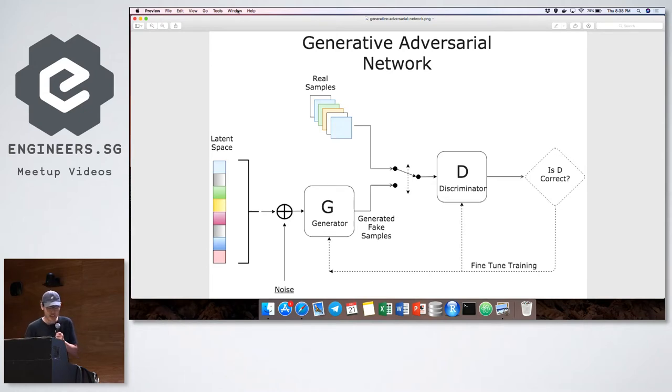So GANs are actually a system of two neural networks, one called the discriminator and one called the generator. I took this off some image you can just Google search. And basically, the two networks are fighting against each other in a zero-sum game framework, so it's adversarial.